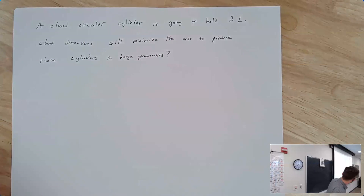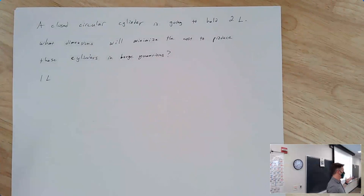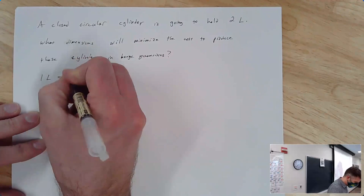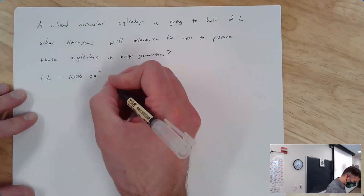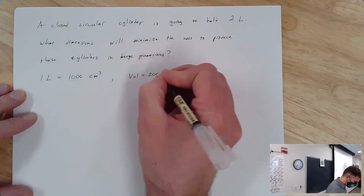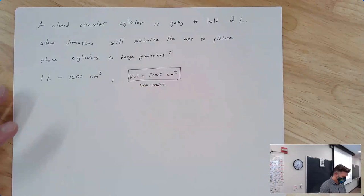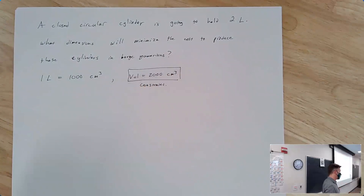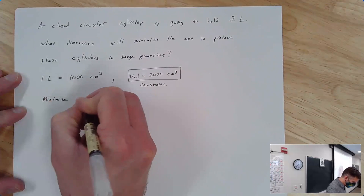If we're minimizing cost, what are we really minimizing? Surface area — because we're minimizing the amount of material used, which affects cost. So we're minimizing surface area. Sometimes different sides of a thing cost different amounts, but in this problem we treat them equally. I like to write the thing I'm minimizing first. Here's my cylinder; the height is h and the radius is r.